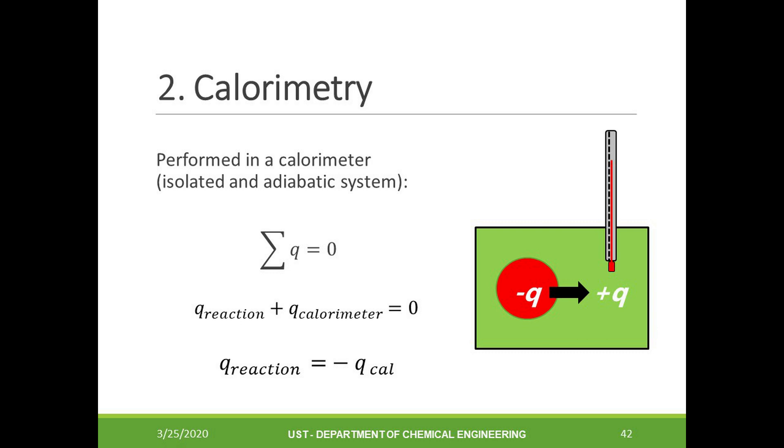Since the calorimeter is an isolated and adiabatic system, this means that all the heat involved stays inside our calorimeter. So we can say that the summation of all heat is equal to zero. We know that whatever heat lost from the system, shown in red, will be transferred to the surroundings or the green area in the figure. Therefore, the heat absorbed by the calorimeter is equal to the heat evolved by the reaction.